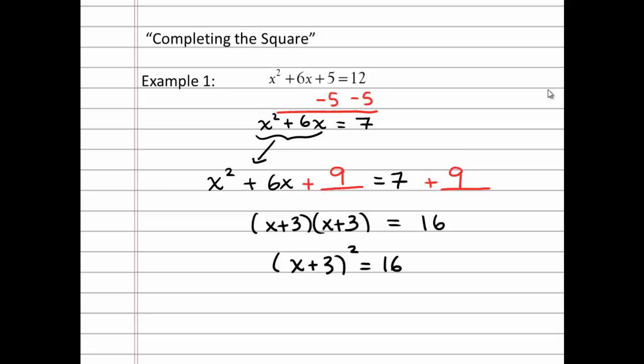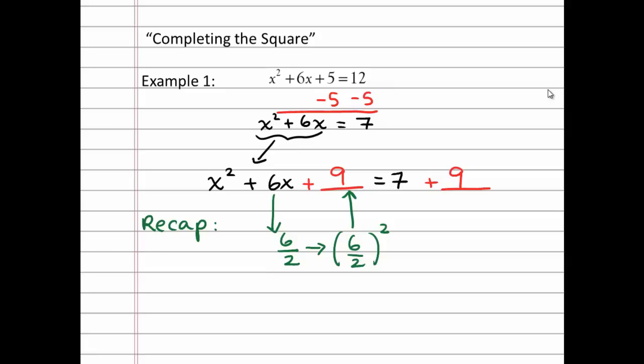So let's recap. In order to form my perfect trinomial, I'll take half of my linear term, otherwise known as the b value, so 6 over 2, and then I'll go ahead and I'll square that. So in other words, I get 3², which forms 9, the missing number for my perfect trinomial. And I'll make sure to add 9 to both sides of my equation.